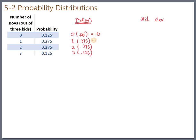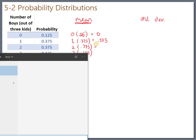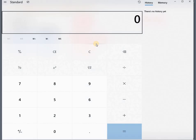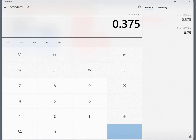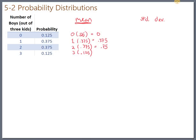That's .375 and two times point three seven five. Here's where I need a calculator. And 3 times point one two five is point three seven five. If you add all four of those numbers up, you get 1.5.